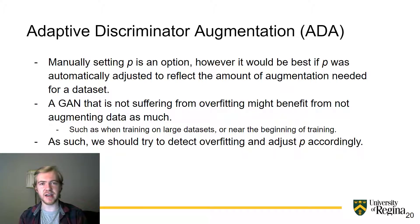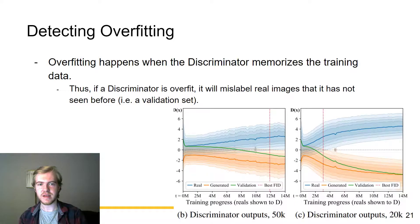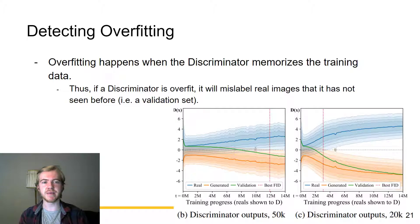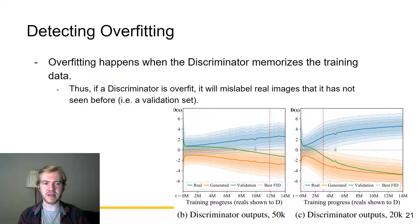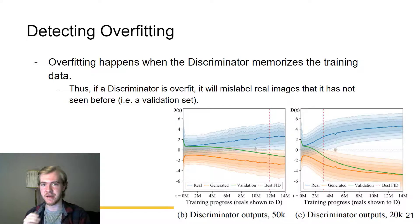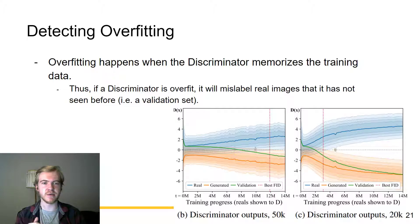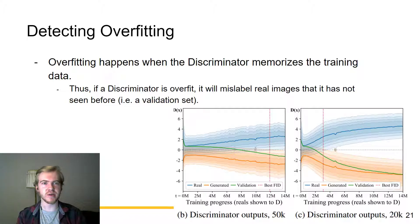We should try to detect overfitting and adjust the probability P accordingly. Reviewing what overfitting is: overfitting happens when the discriminator memorizes the training data. If a discriminator is overfit, it will mislabel real images it has not seen before — i.e., a validation set. As training goes on and the discriminator becomes more and more overfit, the score of the validation set images will become lower and lower as the discriminator has memorized the actual real images.